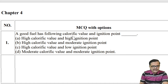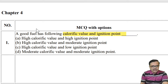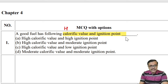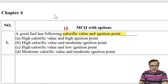A good fuel has the following calorific value and ignition point. We know that a fuel should have a higher calorific value. But what about ignition temperature? It is the minimum temperature at which a fuel starts combustion. We may think it should be minimum or maximum, but remember it should be moderate.